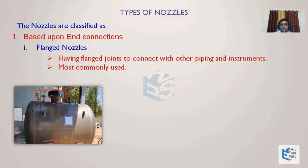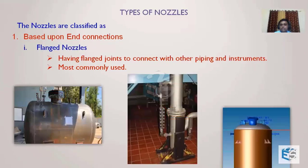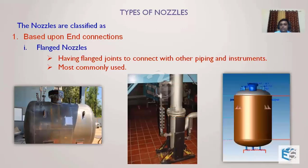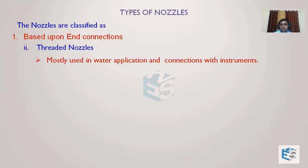Flanges are available in all ratings from 75 to 2500, so they can handle very high pressures. Flange connections are reliable and most commonly used in the oil and gas industry. These are the various flange nozzles which are getting connected either with instruments or with the process.